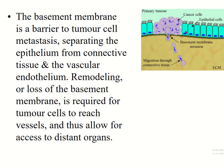The basement membrane acts as a barrier to tumor cell metastasis, separating the epithelium from the connective tissue and vascular endothelium. Remodeling or loss of the basement membrane is required for tumor cells to reach blood vessels and spread to distant organs — the tumor cell breaks the basement membrane, enters a blood vessel, and can affect distant organs.